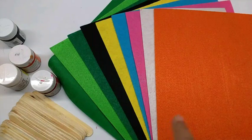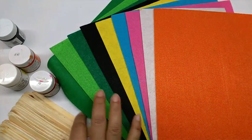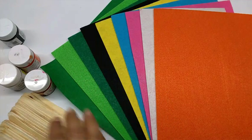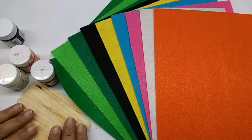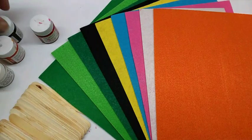The materials required are felt sheets in various colors, greens, yellows, pinks according to the character that we are making, ice cream sticks, and acrylic colors also according to the characters required.